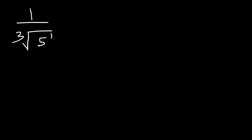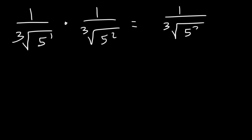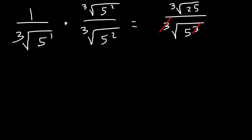Now what about cube roots? Let's say if we have the cube root of 5 in the denominator. Because the index number is a 3, we need a total of three 5s on the bottom. Right now we only have one 5, so we need to add two more 5s. This is a very important step — multiply the top and the bottom by 5 squared. 5 to the first power times 5 to the second power is 5 to the third power, and these will cancel. So this is going to be the cube root of 25 on top, and on the bottom is just going to be 5.